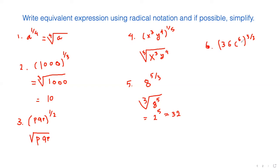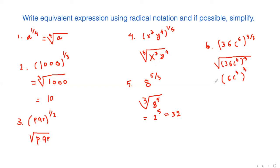Here we have 36, c to the power 6, and the whole thing raised to the power 3 over 2. The index is 2, so we write the square root of 36 and c to the power 6, and the whole thing raised to the power 3. The square root takes care of the 2, so 36 goes outside the radical as 6, and c to the power 6 goes outside as c to the power 3. But the cube is still there, so 6 cubed is 216, and c to the power 3 times 3 gives c to the power 9.